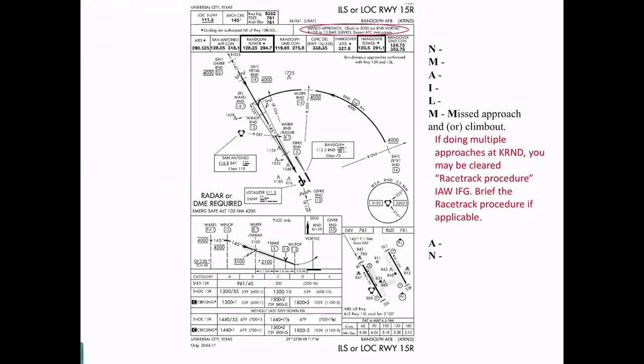The second M is for the missed approach or climb-out. So, if I'm flying the ILS to 1-5 right and I plan on doing a full stop, I need to make sure that I review, regardless of what I'm doing, I need to make sure I review the published missed approach. So, in this case, published missed approach is to climb to 3,000 feet, out the Randolph Vortac 159 radial to 13 DME, which is give key, and expect ATC instructions while I'm en route there. If I'm planning on doing multiple approaches, then I need to coordinate climb-out. For here at Randolph, we do have a climb-out called the racetrack procedure, which is in your in-flight guide. So, if I'm planning on doing the ILS 1-5 right, touch-and-go back to radar to get more approaches, then not only do I want to brief the published missed, but also brief the expected climb-out of what the racetrack procedure would be. And then certainly, I want to pay attention to what actually I am given to do.